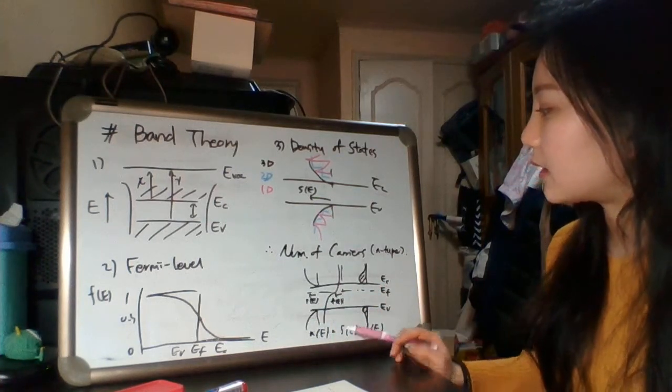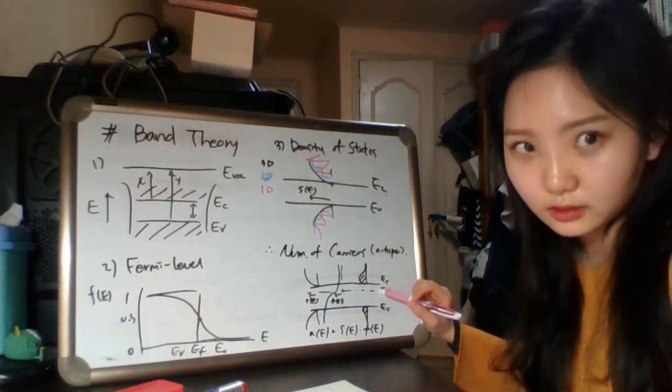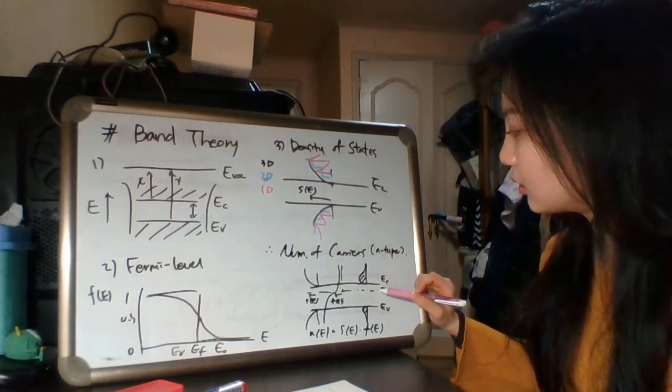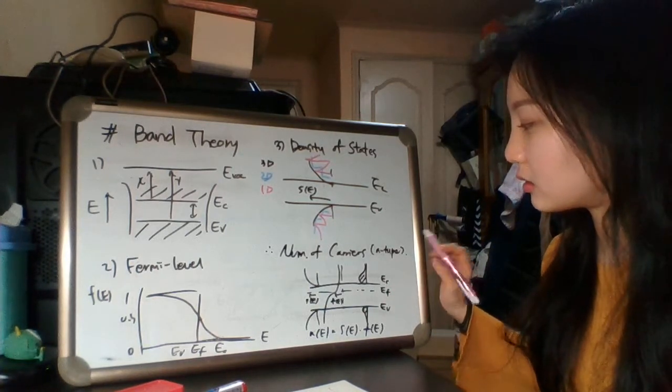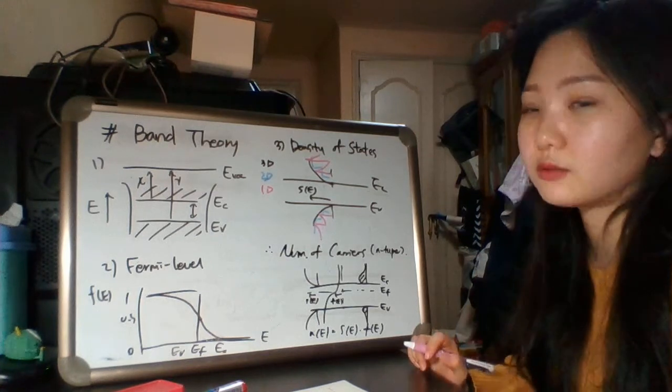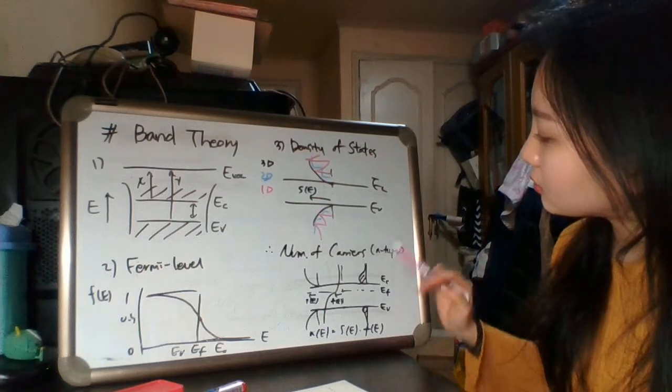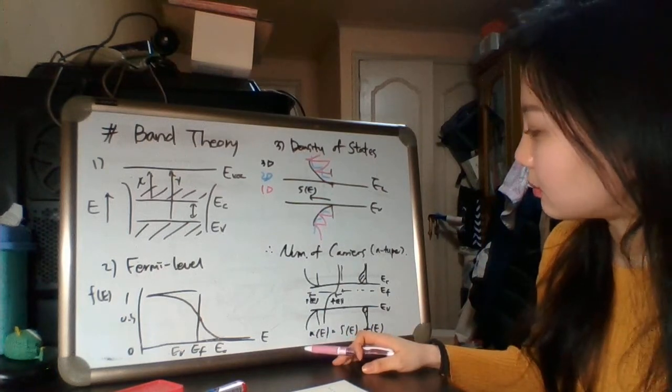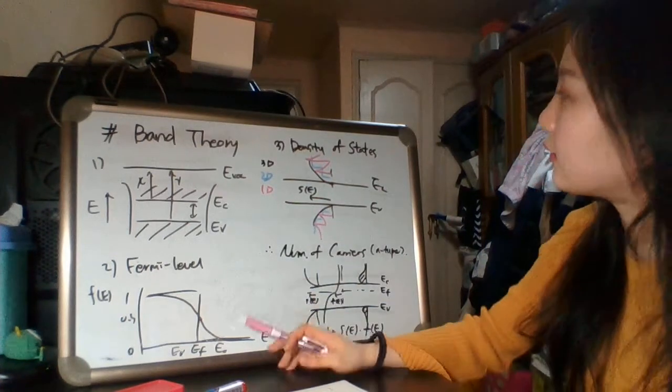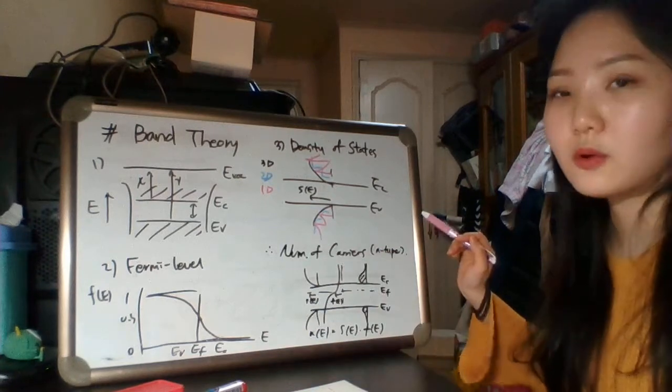And finally this is the graph of number of electrons. So we can get the number of electrons. We can think reversely at P-type. So the equation will be multiple of Fermi level and density of hole states.